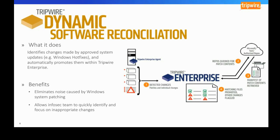What often happens is organizations don't have time to research every individual change, so they declare a change amnesty for that event and promote everything. That's a very tempting approach, but it leaves a significant window of opportunity for attackers who know your process — they can insert malware or malicious code into your environment and it becomes baked into your baseline. That's a risk many organizations are not comfortable with.